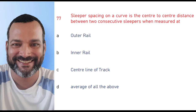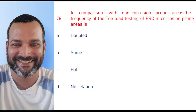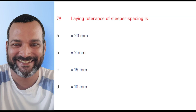The next question is: sleeper spacing on a prone area is the center-to-center distance between two consecutive sleepers when measured at the outer rail. In comparison with non-corrosion prone areas, the frequency of toe load testing of ERCs in corrosion prone areas is double. Laying tolerances of sleeper spacing is plus or minus 20 mm.